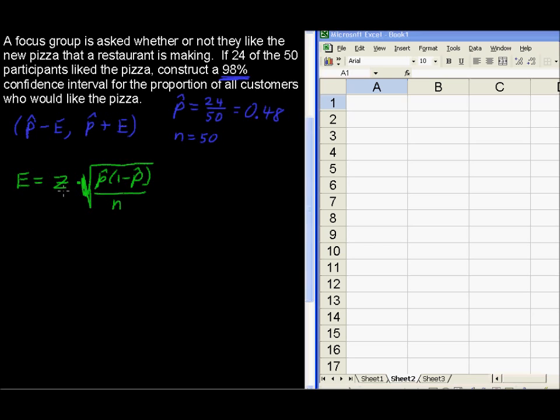Now this z, you could certainly look this up in the table. You've got 98% is the middle part of the normal distribution. But we're going to use Excel. So first of all, let's look at what we're finding.